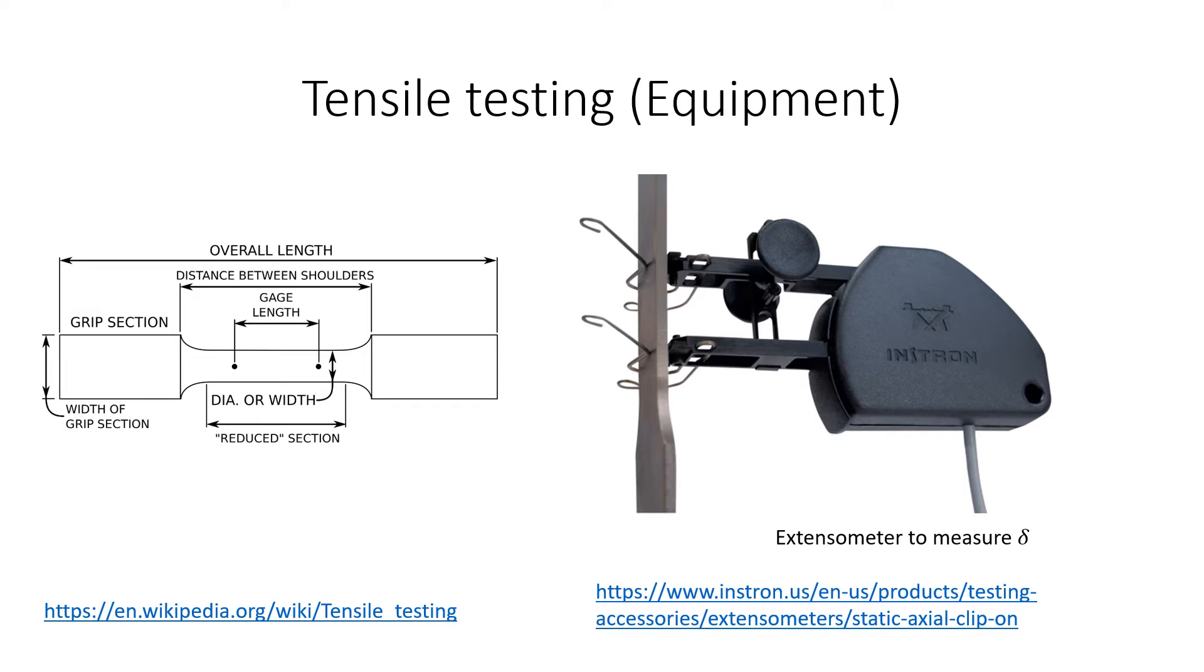The change in the gauge length is traditionally measured using an extensometer that is mounted on the specimen at the locations identifying the ends of the gauge length. There are other modern non-contact extension measurement techniques. Please visit the INSTRON or MTS websites to learn about such methods.